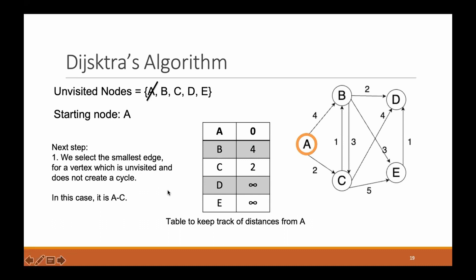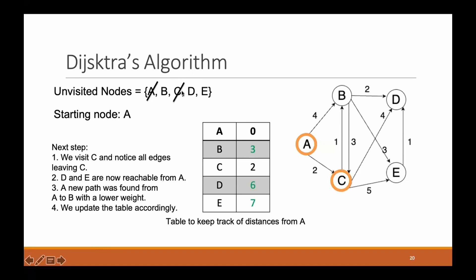On the next step we select the smallest edge. We had two edges, AC with value two and AB with value four. The smallest is AC with cost two. When selecting the edge we make sure to select the smallest edge for a vertex that is unvisited and does not create a cycle. So we select AC and go to visit C. Since we're visiting C, we cross it out from our unvisited nodes. We then notice all edges leaving C: CB, CD, and CE.